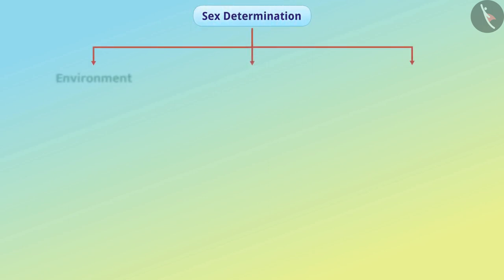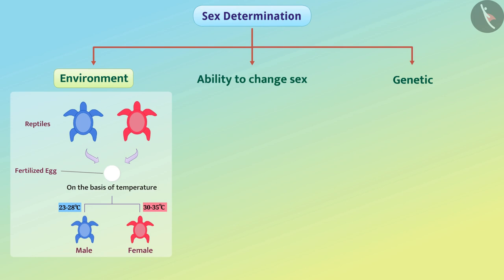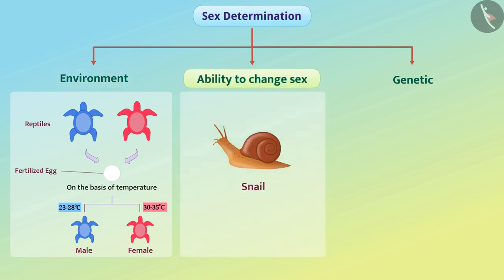The sex determination of an organism depends on various factors. For example, sex determination in some organisms depends on the environment. In some animals like reptiles, the temperature at which the fertilized egg is kept determines whether the offspring will be a male or a female. Some animals, such as snails, may change their sex, meaning that sex determination in snails is not genetic.